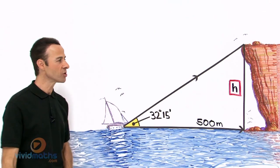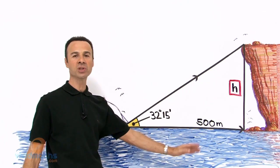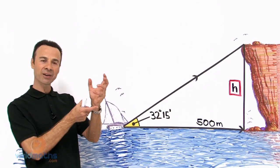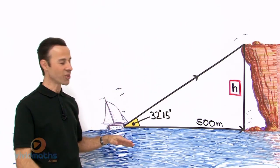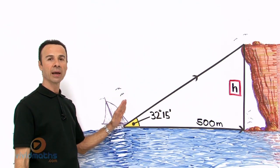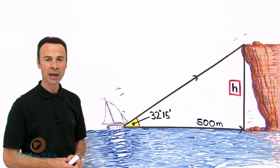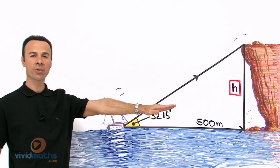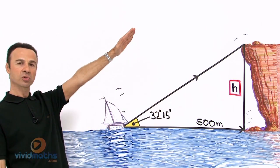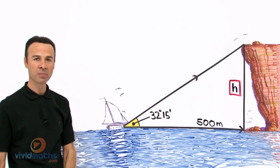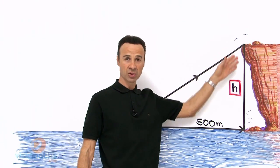And she notices this cliff way out here, 500 meters out from where she is. So she gets a little protractor out and actually measures the angle of elevation. And what is the angle of elevation? It is from the horizontal or the mean sea level upwards to the target of your measurement, which in this case is the top of the cliff.